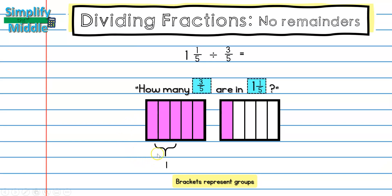Notice that this bracket goes from here to here, and it is showing that I have a group of one, two, three. So I want to know how many groups of three can I find in one and one-fifth? Notice here that I only have room for another set of three. So how many three-fifths are in one and one-fifth? Two — because I was able to make exactly two groups here.